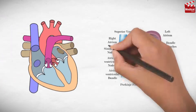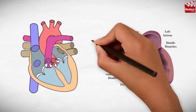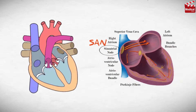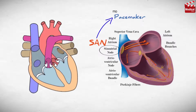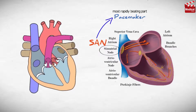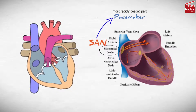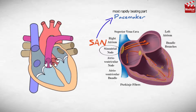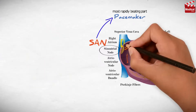Normally, the heart beats rhythmically, and this rhythm depends mostly on the sinoatrial node, or SAN. SAN is called the pacemaker of the heart, as it is the most rapidly beating part of the heart. SAN controls the heart rhythm and initiates the contraction of the heart. In general, the part discharging at the highest rate is the pacemaker of the heart.